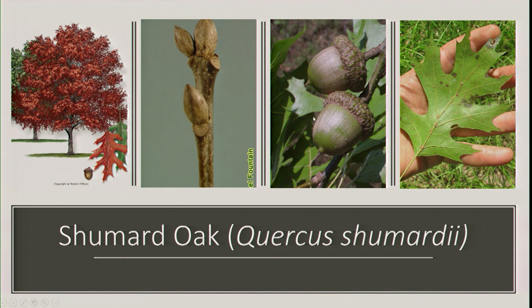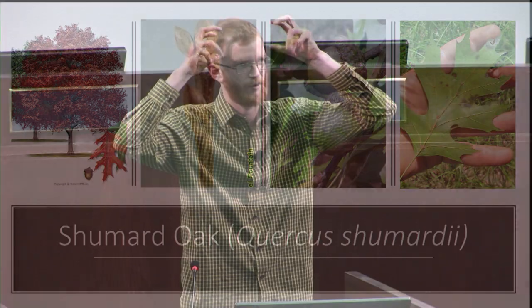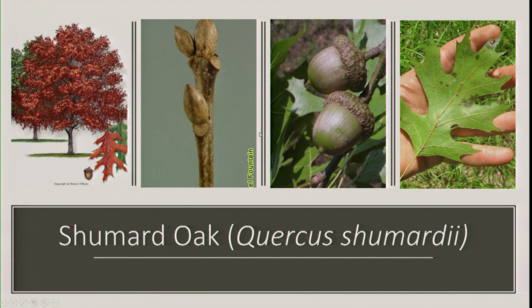The Shumard oak acorn cap looks like a beret — shorter and coming out further on the side — while a Nuttall acorn looks more like a beret as well, just with differences in proportion. Shumard oaks provide pretty good fall color, not as much as Chinese pistachio or maples. A characteristic feature of oaks is clustering buds — at the end of a branch you'll rarely get one bud; it's usually a cluster of three to five. So if there are no leaves or acorns, look at branch tips — a cluster of buds means it's an oak.